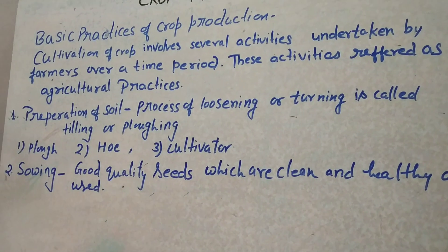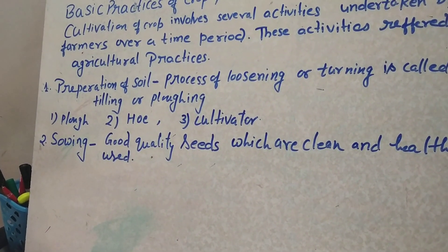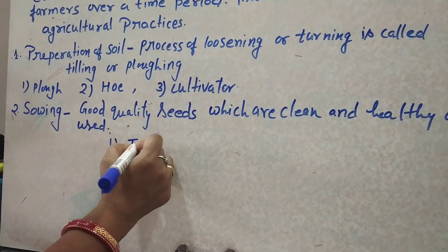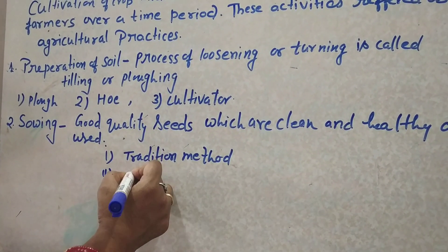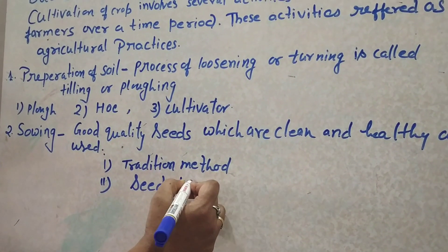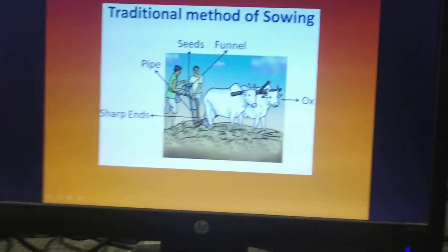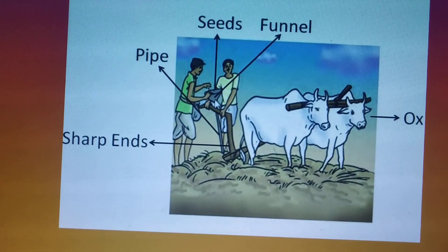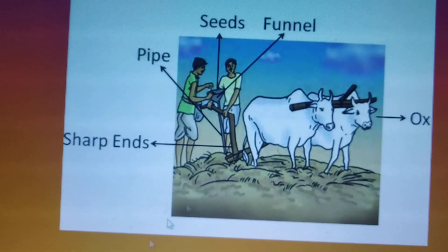In sowing, good quality seeds that are clean and healthy are used. For sowing, there are different types of tools. The first is the traditional method — bulls are used along with a funnel and a pipe attached to it. In olden days, this traditional technique was used to carry out the sowing process.